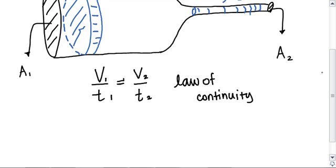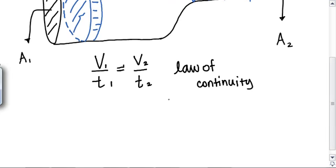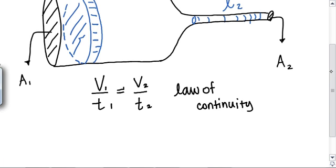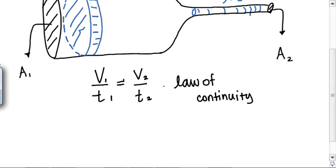Okay, so now if volume is, how can I find the volume of this bit of fluid right here? If I have the length of this little bit of fluid was l1 and this is A1, how can we find volume? Any ideas? Area times length.